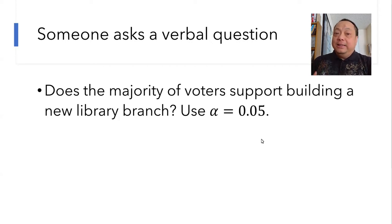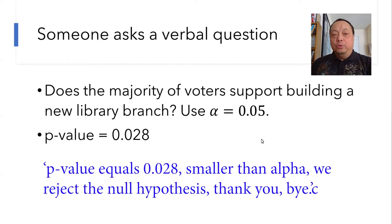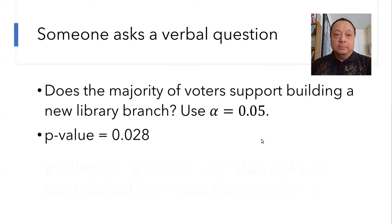We do our survey, collect our data, run the hypothesis test, and we end up with a p-value. Suppose p-value equals 0.028. We cannot just come back and tell the person p-value equals 0.028, smaller than alpha, we reject the null hypothesis, thank you, bye. No, that's bad communication.